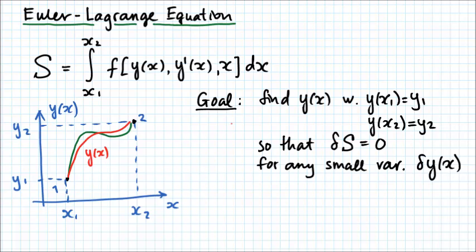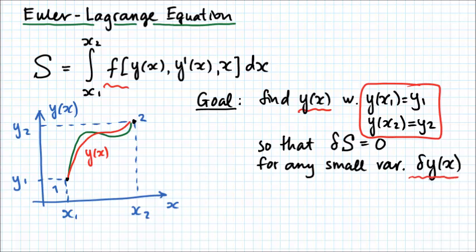Let's derive the Euler-Lagrange equation. Our goal is to find a curve y of x that goes through two points — point 1 and point 2 — such that the functional given by this definite integral is stationary. What it means is that its variation, delta S, is 0 for any small variation delta y of x, which is itself a function.